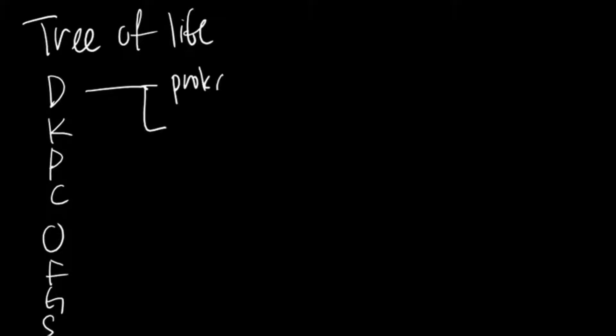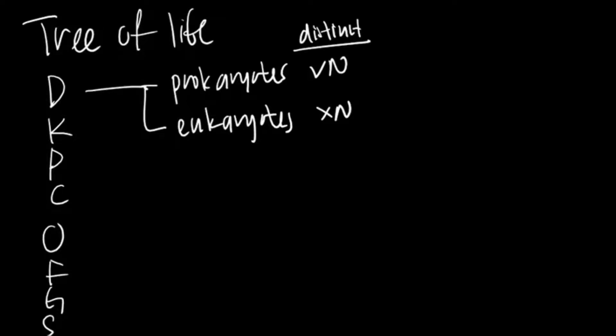There are two domains, first prokaryotes and eukaryotes. Prokaryotes have no nucleus, no membrane-bound organelles like mitochondria or chloroplasts. And eukaryotes, including us, are the opposite. We have nucleus and membrane-bound organelles. I've written wrongly for the sign in front of nucleus, it's supposedly cross for prokaryotes and tick for eukaryotes.